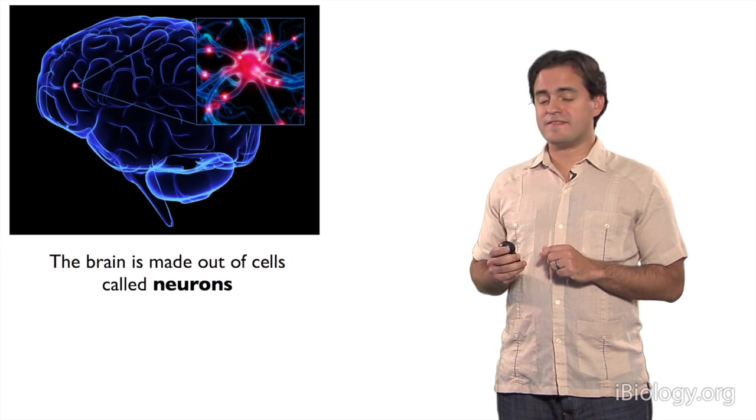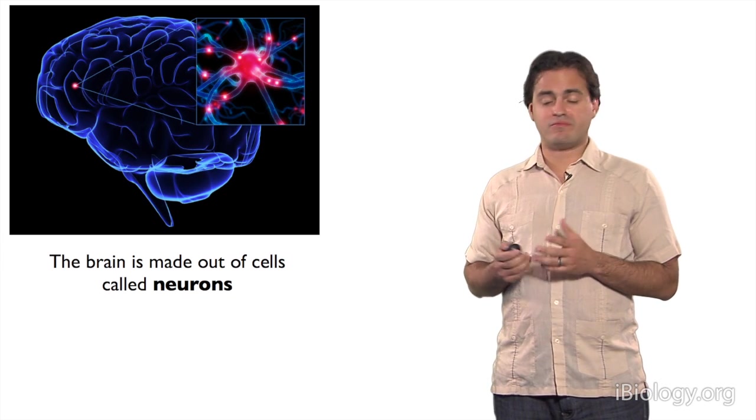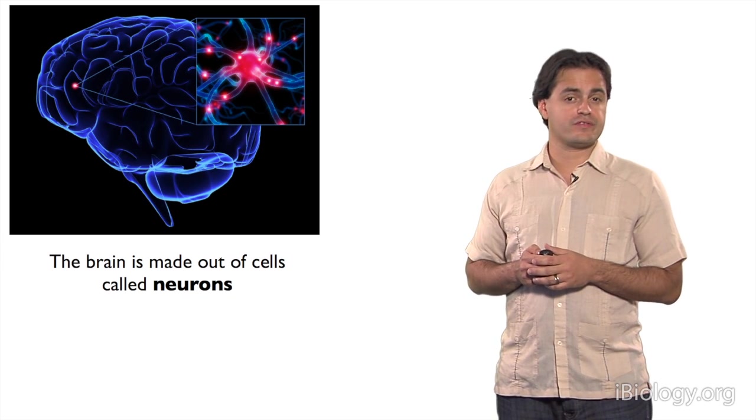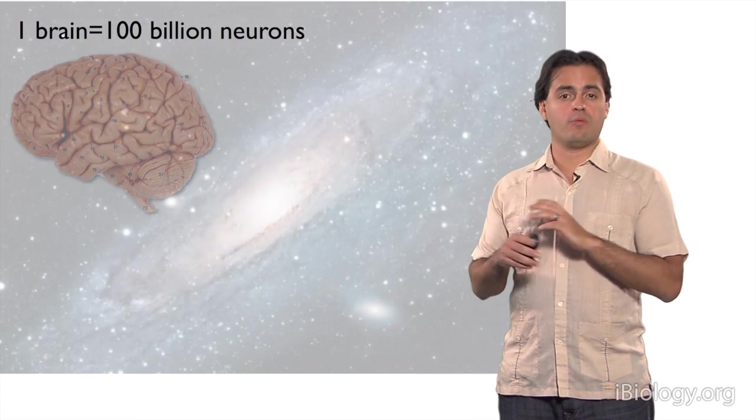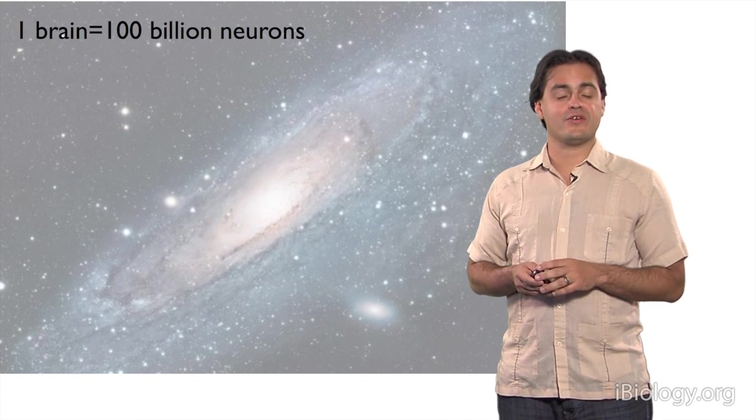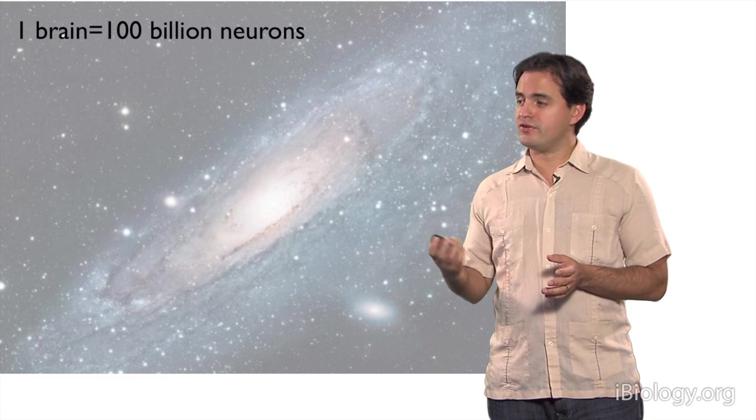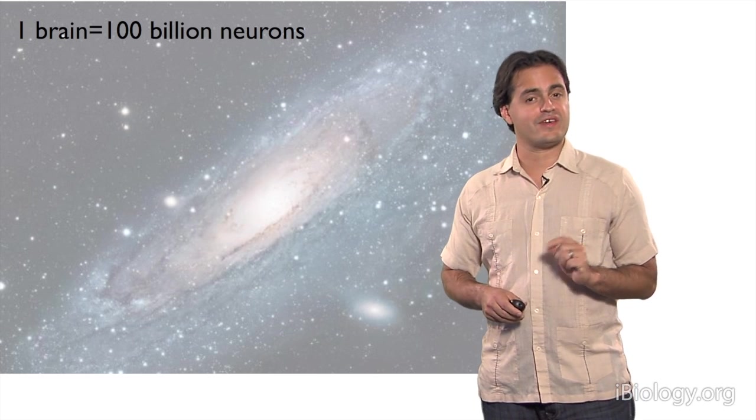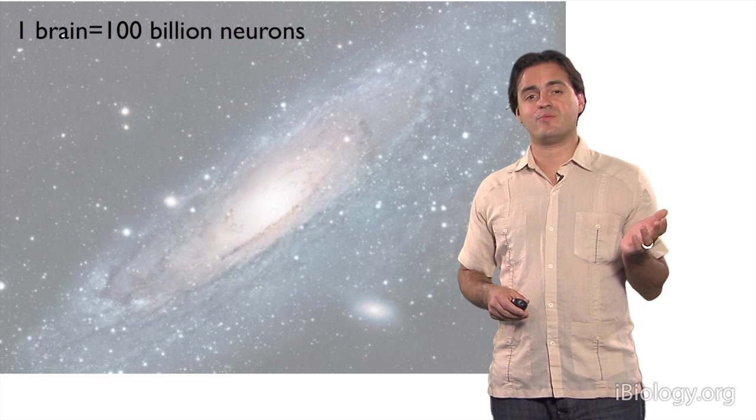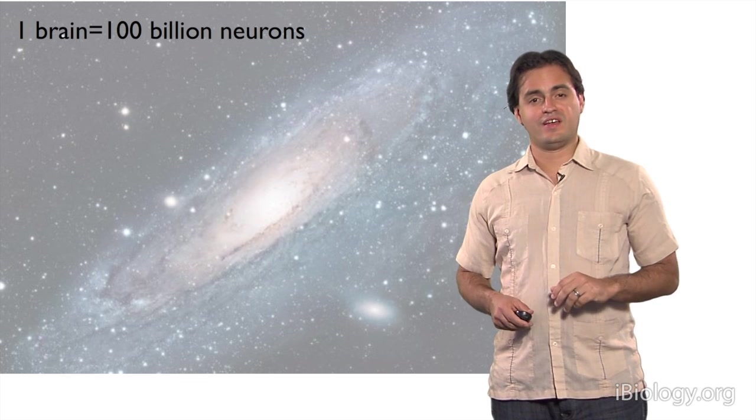Brains are made out of cells called neurons. There are more neurons in a single human brain than there are stars in the whole Milky Way. There are about a hundred billion neurons. So if there are students out there watching this talk, next time you're looking at the sky, think that there are more neurons in your brain than there are stars you're seeing in the skies.